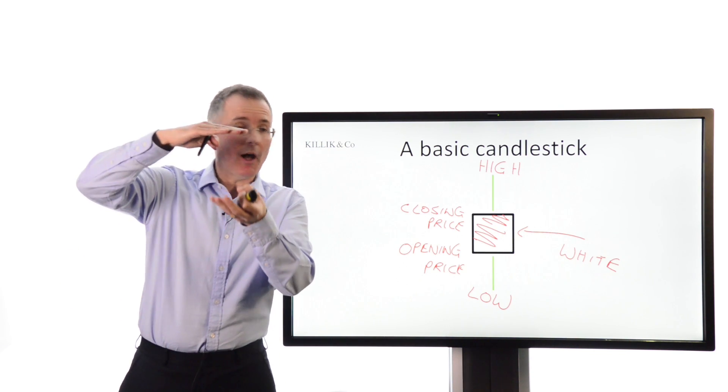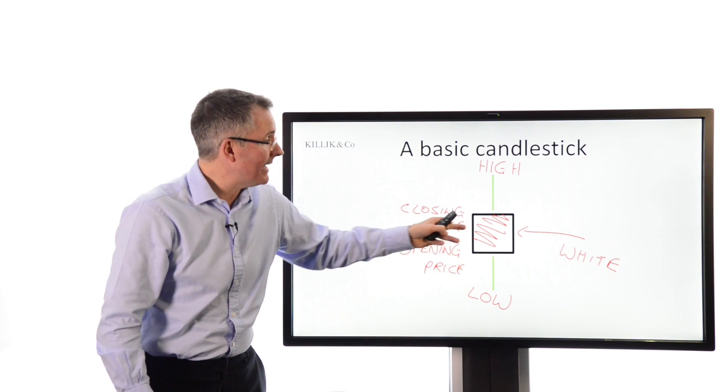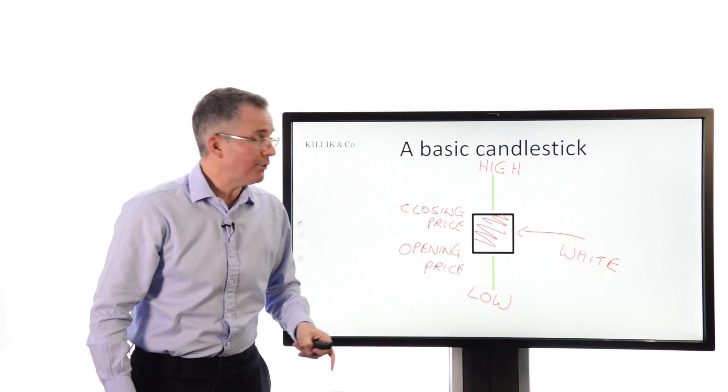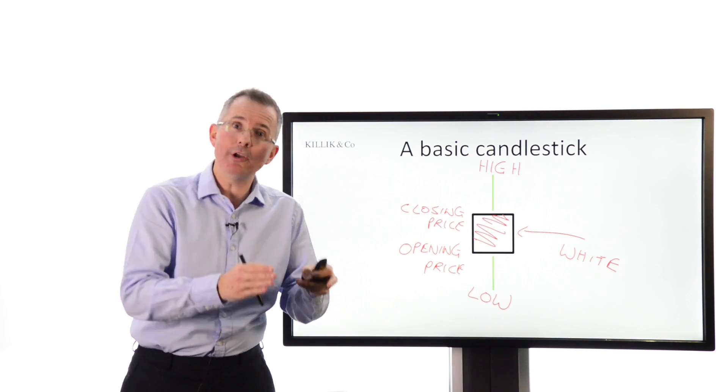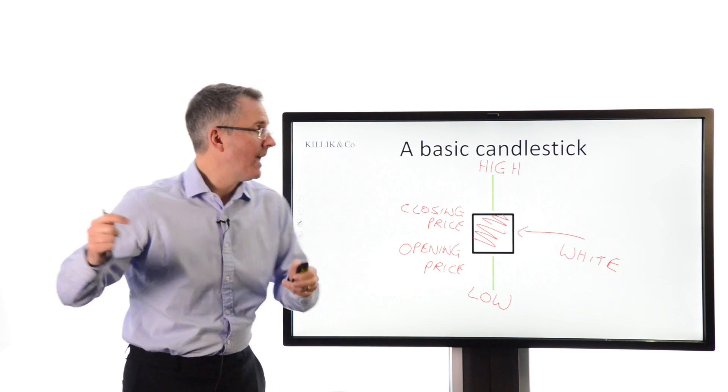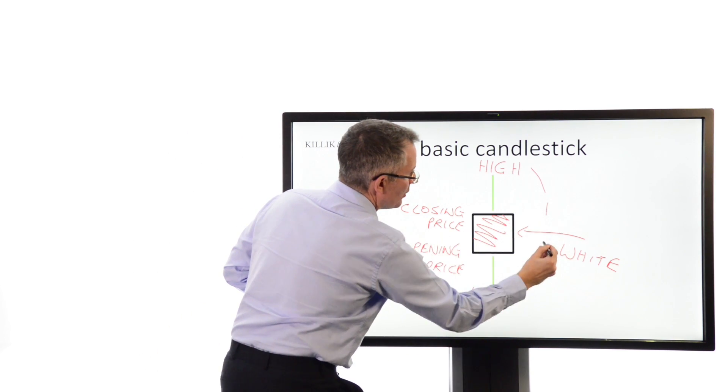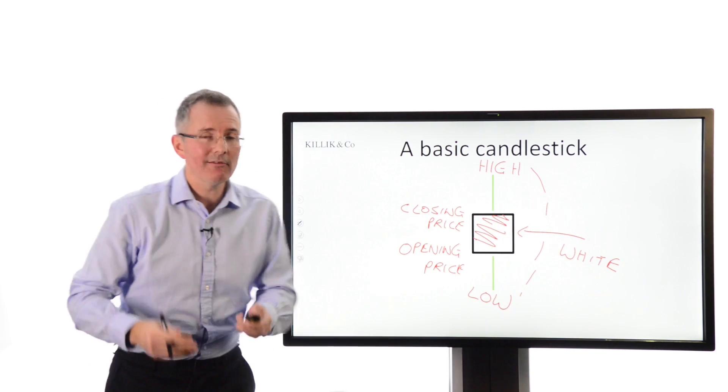If you get the middle bit blocked in, quite often in black or maybe in red, for example, it means that the reverse was true, so the closing price was below the opening price for the day, which is quite possible, which means the stock fell. And the gap between the high and the low gives you some feel for volatility.